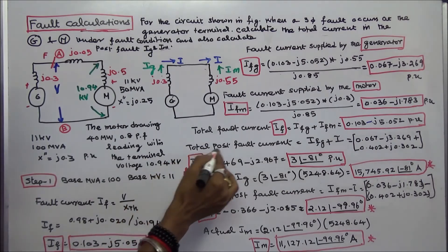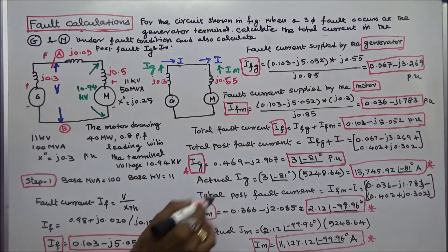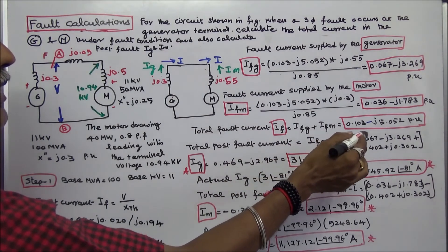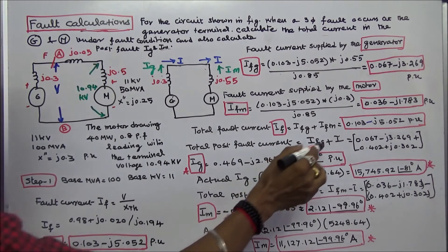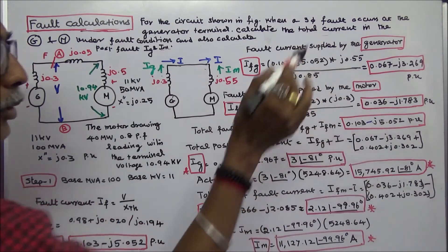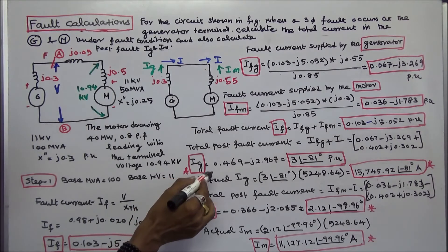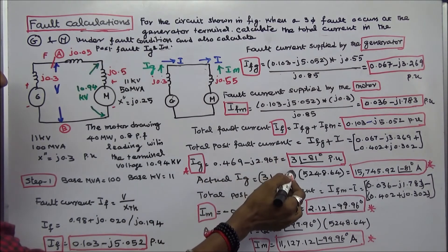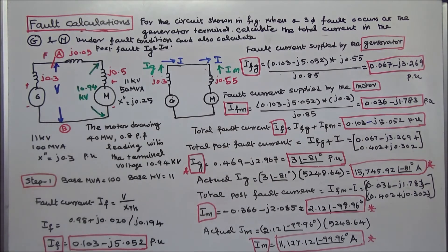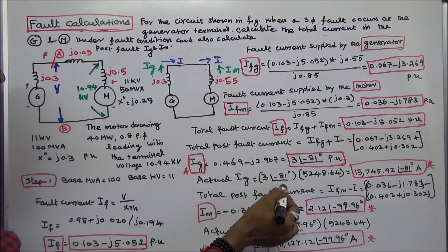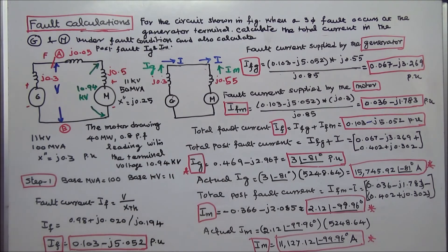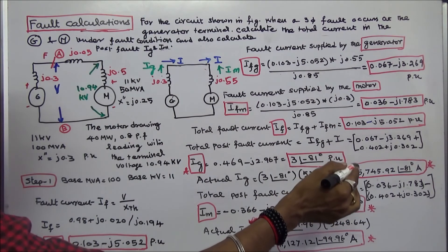Next we calculate the total post-fault generator current. Total post-fault current IG = IFG + load current = (0.067 − J3.269) + (0.402 + J0.302) = 0.469 − J2.967 per unit, which in polar form is 3 ∠−81° per unit. Actual IG = per-unit value × base = 3 ∠−81° × 5248.64 = 15,745.92 ∠−82° amps.